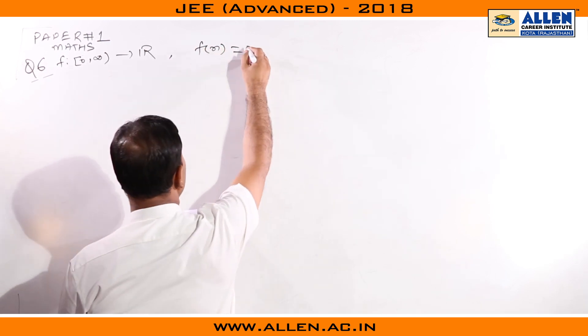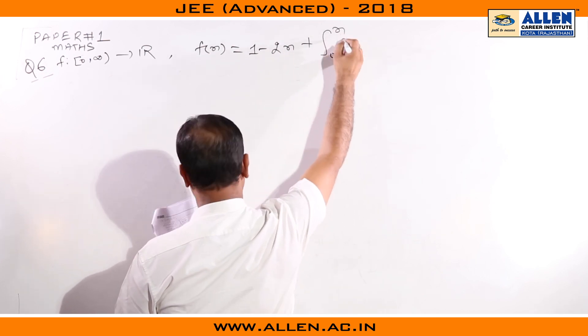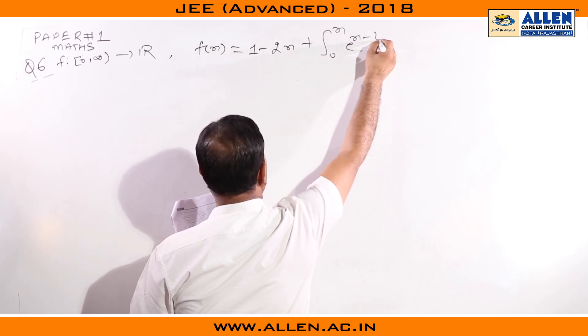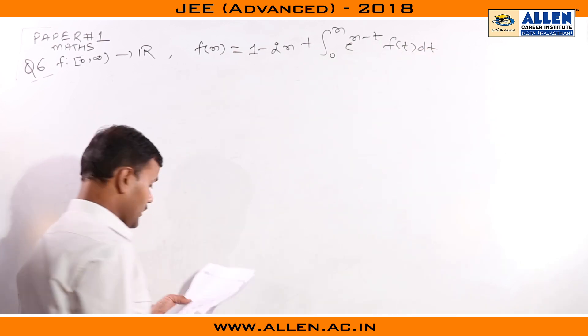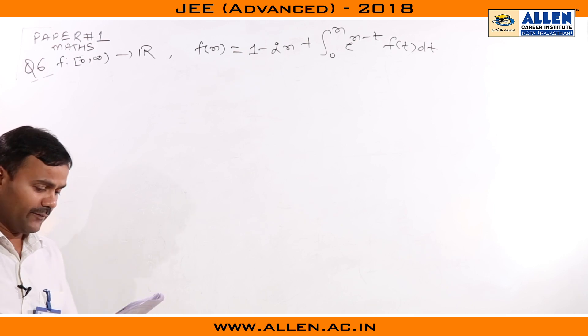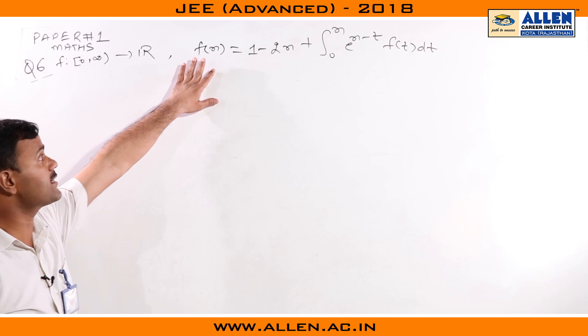The integral equation is f(x) = 1 - 2x + integral from 0 to x of e^(x-t) f(t) dt. We have to check which of the following statements is or are true. From this equation, we will first find the function f(x).